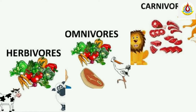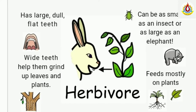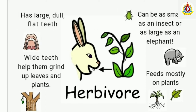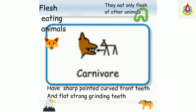As we all know, there are three types of animals: Herbivores, Omnivores and Carnivores. Herbivores have large, dull, flat teeth. Wide teeth help them to grind up leaves and plants. They can be as small as insects and as large as an elephant. They mostly eat plants.